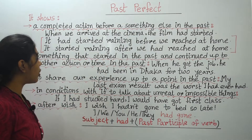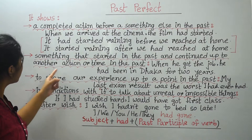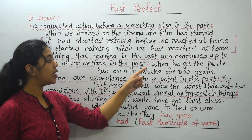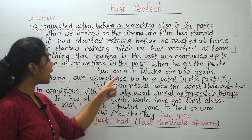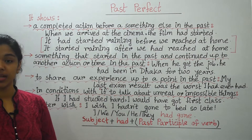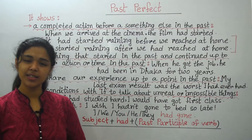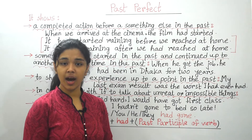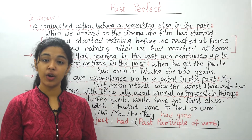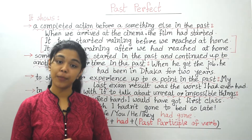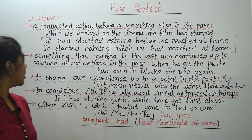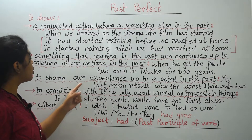Past perfect is also used for something that started in the past and continued up to another action or time in the past. Example: 'When he got the job, he had been in Dhaka for two years.' This means he had been staying in Dhaka for two years before he got the job, and up to the point he got it.